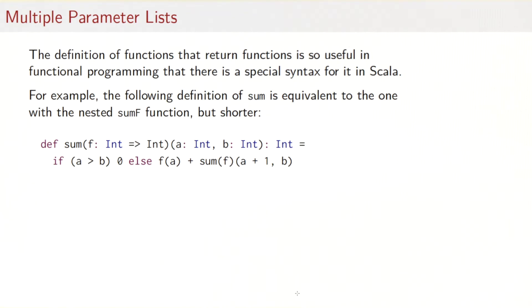So here's another piece of syntactic sugar. The definition of functions that return functions is so useful in functional programming that we have a special syntax for it in Scala. So the previous definition of sum actually can be written shorter like that. We can just combine the two parameter lists of the outer function and the nested function and write them one after the other. We would say sum of f int and then comes another parameter list with a and b. And the body of the sum function is very much like it was before.